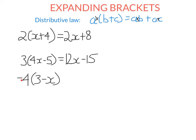Let's try this one — a little trickier, because we now have a negative at the front. But we follow the same process. We distribute the negative 4 to 3, so negative 4 times 3 is negative 12. And we distribute the negative 4 to negative x. So this is negative 4 times negative x. Negative times a negative is a positive, so this ends up being positive 4x, and we're done.